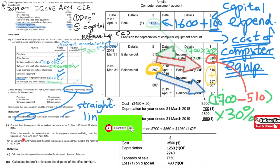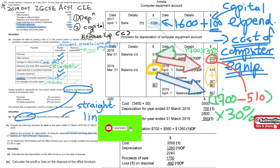I would like to remind you that the question asks us to bring down the balances for both 1 April 2018 and 1 April 2019. So be careful to do that. Now we will move on to Part D.